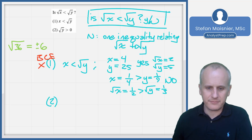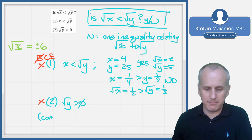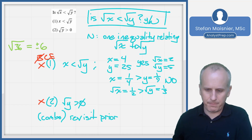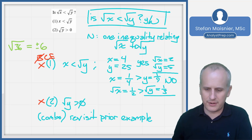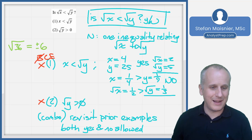Condition 2 says the square root of y is greater than zero. This tells us nothing about x, so condition 2 alone is clearly not sufficient — we eliminate choice B. Considering the combination, revisiting our earlier examples shows that the square root of y was greater than zero in both our yes case and our no case, meaning both yes and no are still allowed. Since the combination is also not sufficient, the answer is choice E.